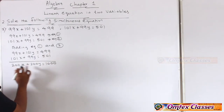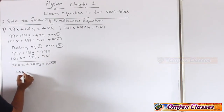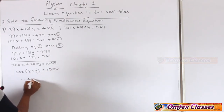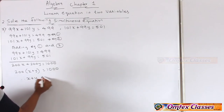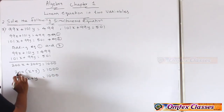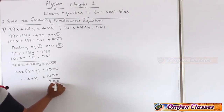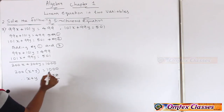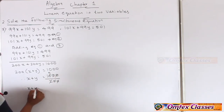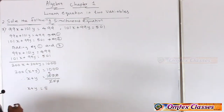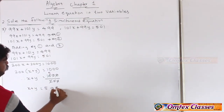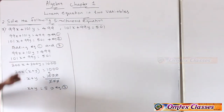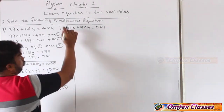अभी इसमें common क्या ले सकते हैं — 200 को common लेंगे, तो अंदर आएगा x plus y equal to 1000 divided by 200, जो divide होगा तो मिलेगा x plus y equal to 5. यह बन गया equation number 3.